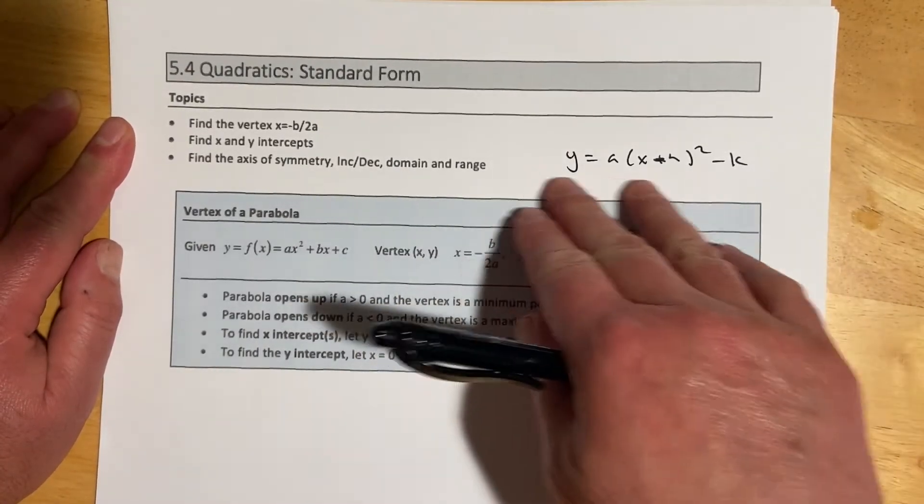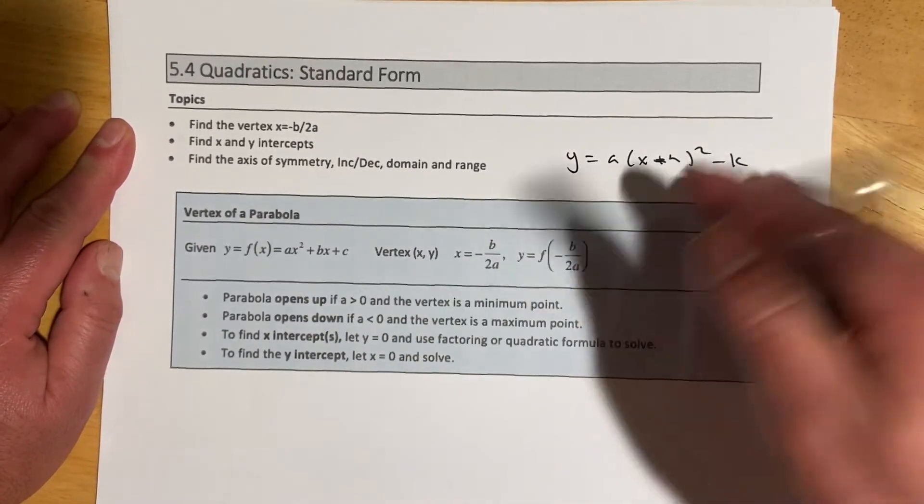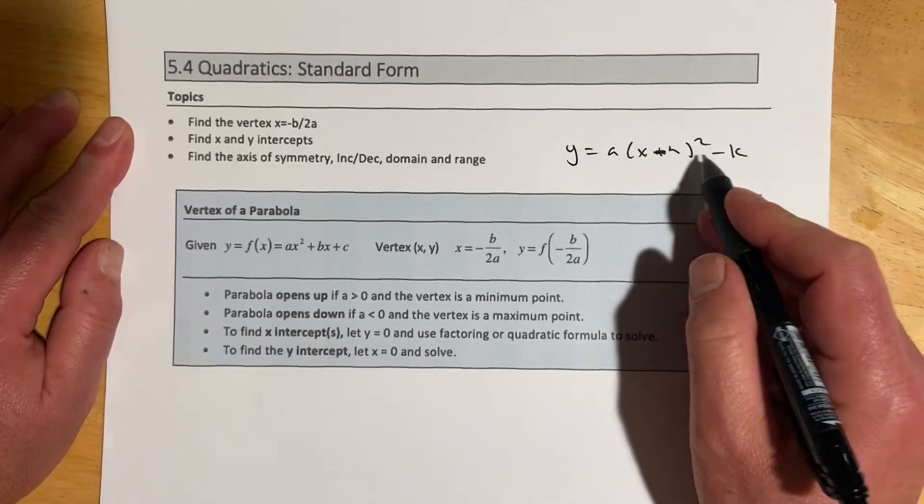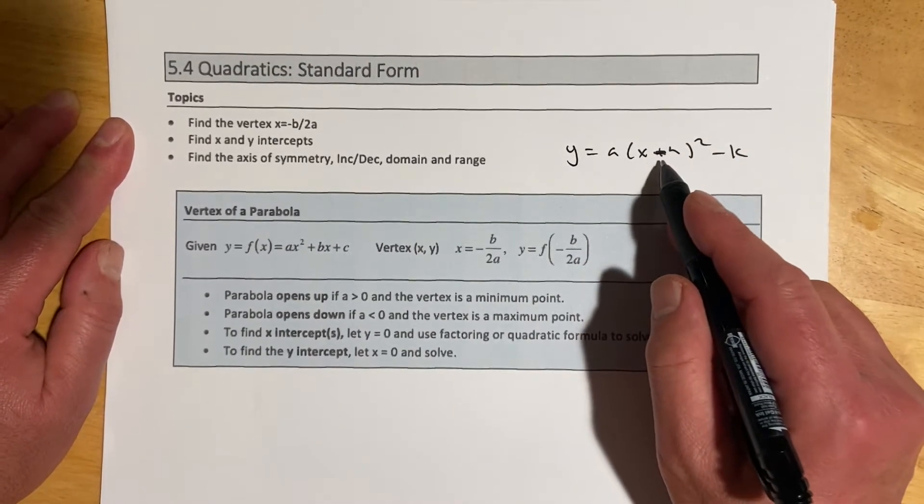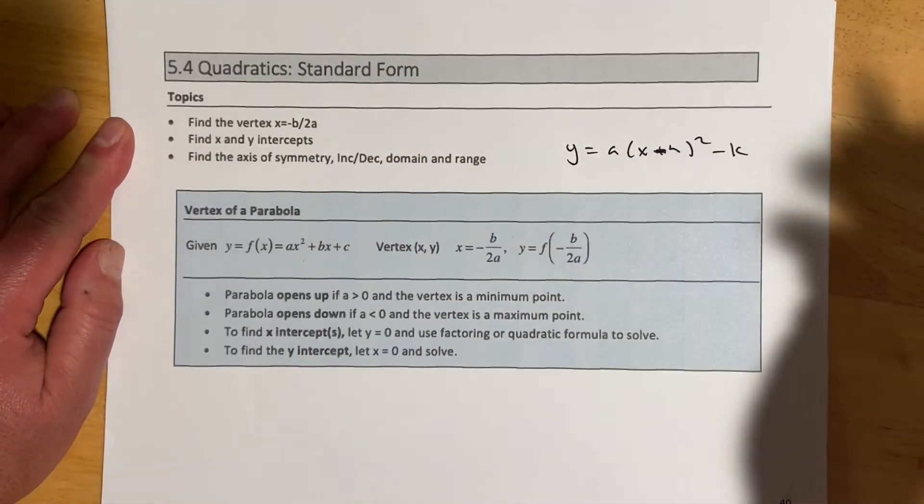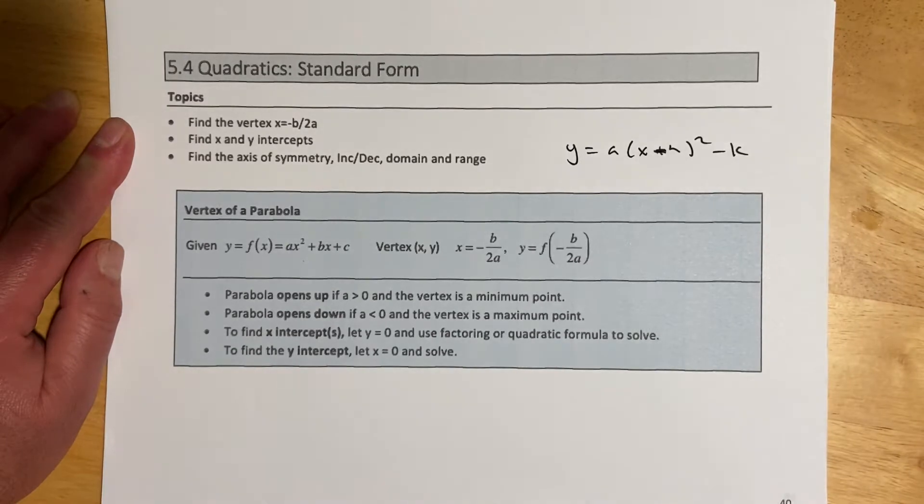Last time we looked at vertex form, which is right here, and that should be a minus. Again, some books will call this one standard form. For me, I'm used to calling this version standard form, this version vertex form. So that's just the language I will use.